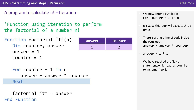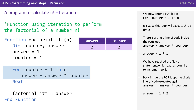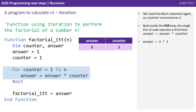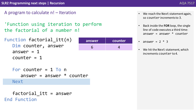There is a single line of code inside the for loop: answer equals answer times counter, so answer equals 1 times 1. We reach the next statement which causes the counter to increment to 2. Back inside the for loop, the single line executes again: answer equals 1 times 2. Counter increments to 3, and the line executes a third time: answer equals 2 times 3. We hit the next statement which increments the counter to 4.